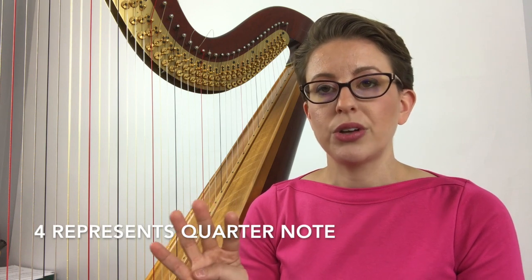The bottom number indicates which note will get one beat. What that means is that the bottom number represents a certain kind of note that gets one beat. So for instance the 4 in 4-4, that bottom 4 represents a quarter note. So that tells you that the quarter note gets one beat.